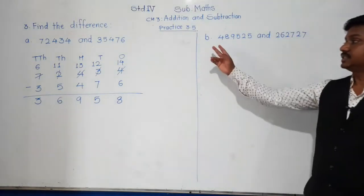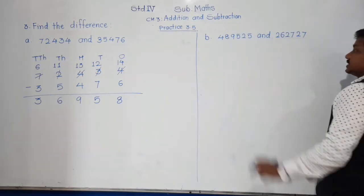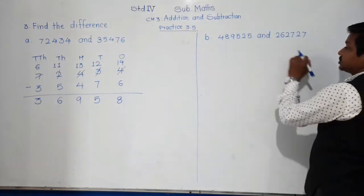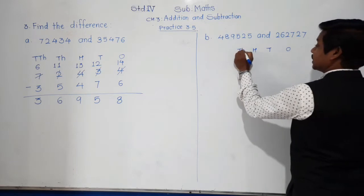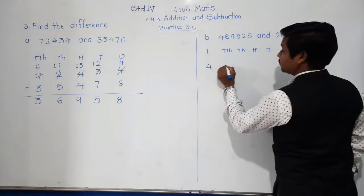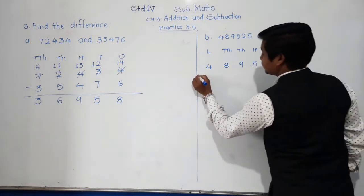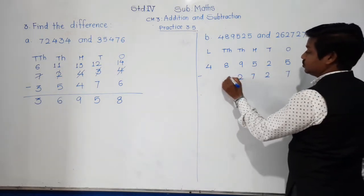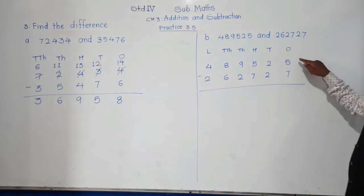Let us move to the next example in this question, example number B: 4,08,9525 minus 2,06,2727 — we have to find the difference between these two six-digit numbers. Write six places. At ones place: 5 minus 7 — not possible. So from the tens digit 2, one is borrowed here, 5 becomes 15, and 2 remains 1.